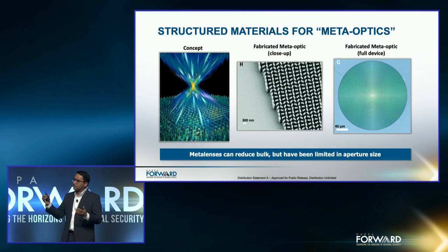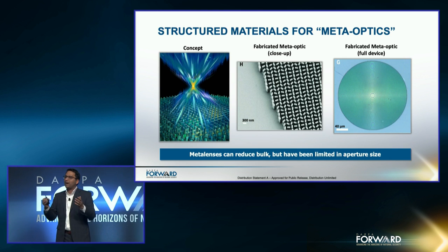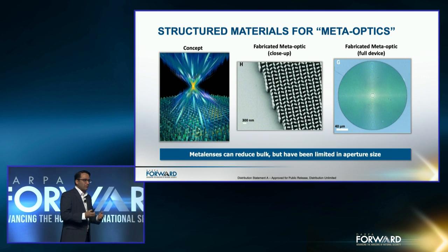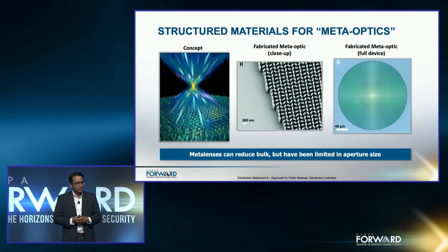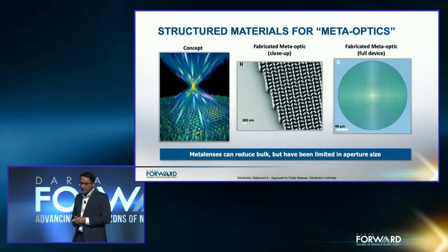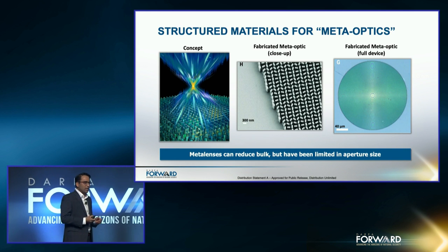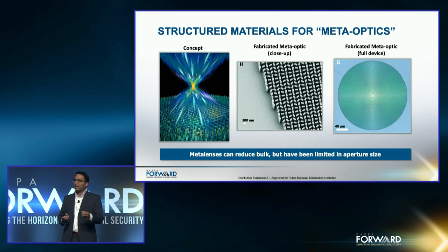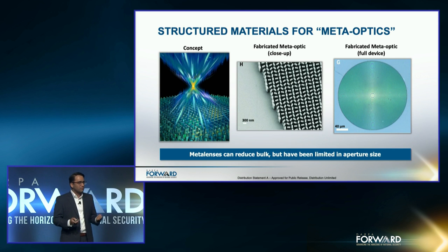The team went ahead and started demonstrating this. In the middle image you actually see a fabricated meta-optic or meta-surface optic, which requires electron-beam lithography to achieve these sizes, and they demonstrated a full-scale device. That full-scale device was limited to around 100 microns or so and very limited in efficiency and bandwidth. But the idea was powerful enough that we could take the glass out of an optical system, and DARPA DSO decided to invest further.